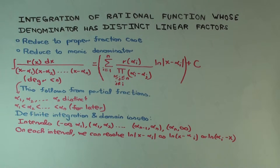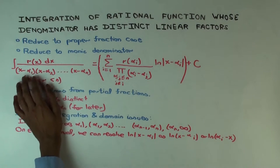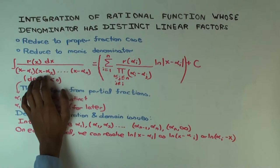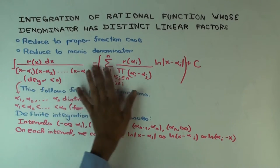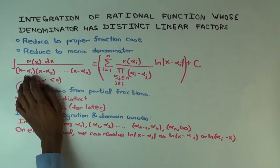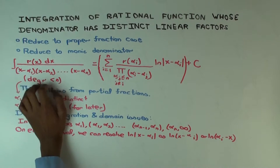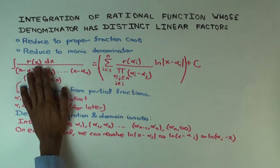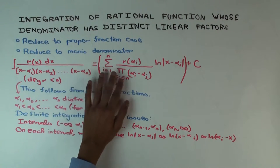We're trying to integrate something where the denominator has distinct linear factors. We have this general formula, which works when the degree of r is less than n. If it's not, we can do long division or other reductions—this tells you how to find the integral.